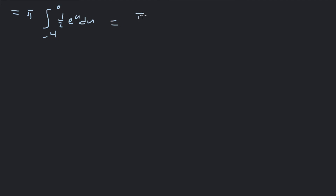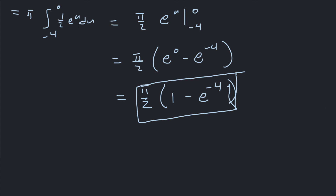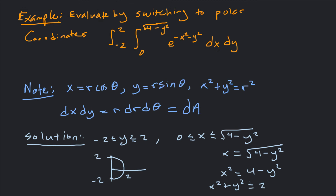Pulling out the one half gives pi over 2 times e to the u evaluated from negative 4 to 0. This equals pi over 2 times e to the 0 minus e to the negative 4, which is pi over 2 times 1 minus e to the negative 4. That is our answer — and notably, this integral literally cannot be done without switching to polar coordinates, since e to the negative x squared has no antiderivative. This is the advantage of being able to use different coordinate systems.